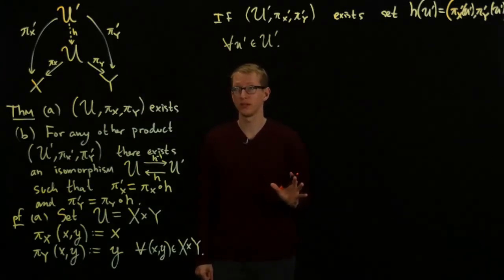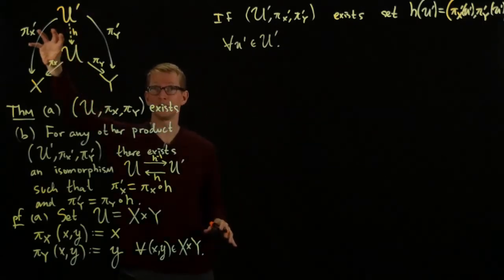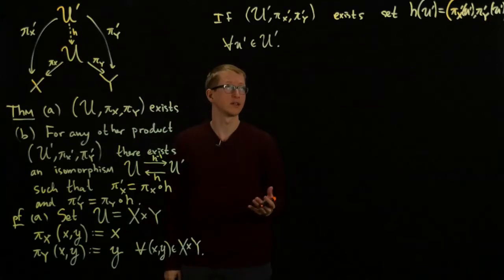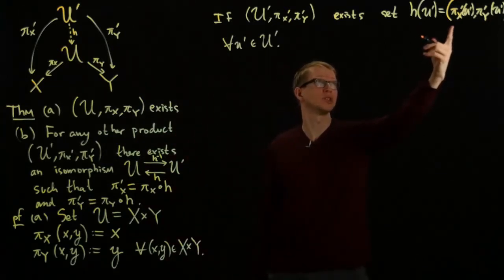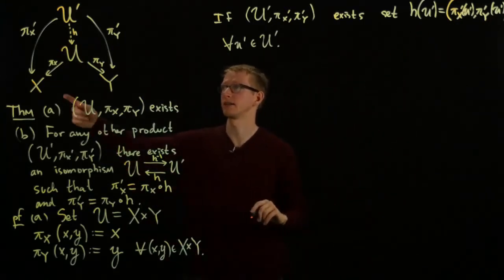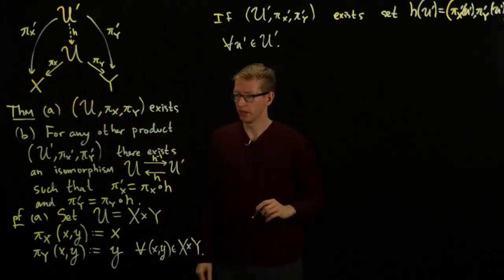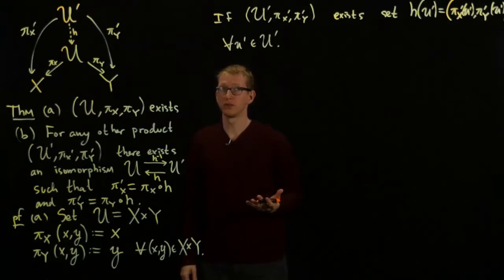Does it satisfy commutativity of this diagram, which means does this part of the diagram commute and does this part of the diagram commute? And you can see that it clearly does, because if I just take the projection onto the first factor, I get exactly the image over here, and similarly for the other side. So this checks the universality.